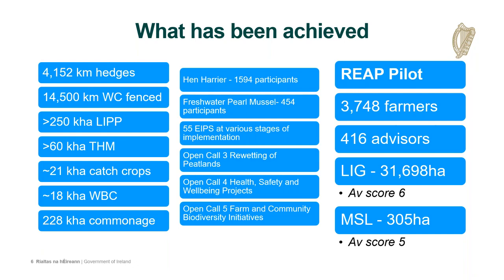In commonage areas, there are about 228,000 hectares committed to the GLAS scheme. Also in parallel to GLAS, there have been various EIP — European Innovation Platform — projects available over the last number of years that have been trialling results-based payments. We've been taking a lot of learnings from those, including the REAP pilot scheme. Some of the bigger projects include the Hen Harrier and the Freshwater Pearl Mussel, as well as the Burren scheme. The new ACRES scheme is trying to take as many learnings as possible from GLAS, these EIPs, and the REAP pilot to drive progress moving forward.